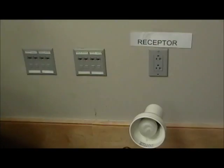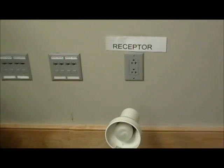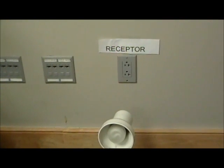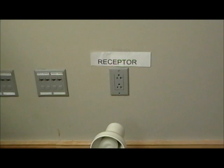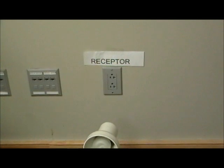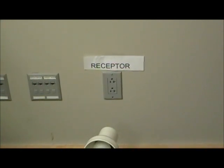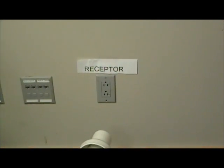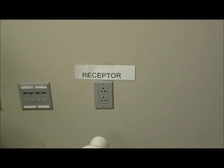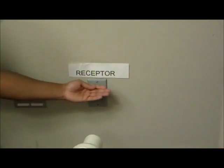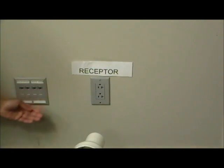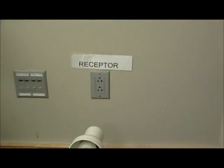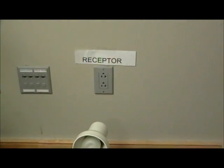Today we're going to talk about receptors and agonists and antagonists and their relationships. We'll start with the receptor. A receptor is a location on a cell surface where certain molecules, such as enzymes and neurotransmitters, attach or interact with cellular components.